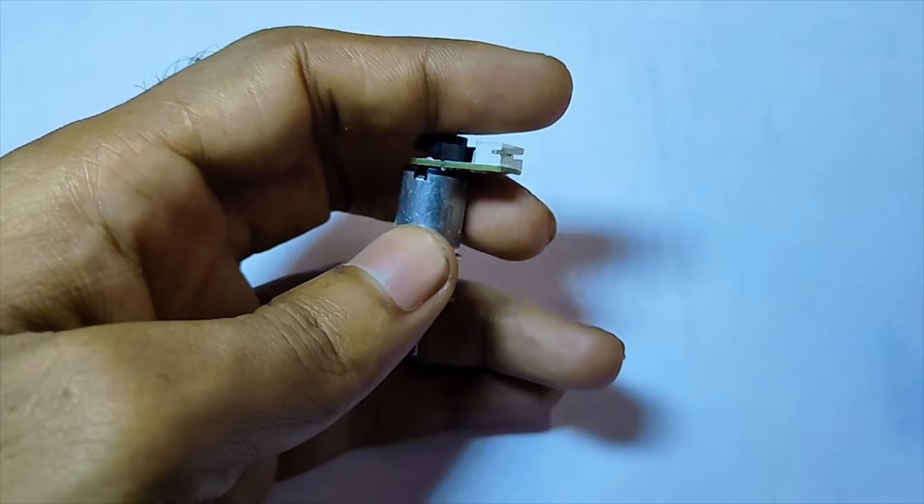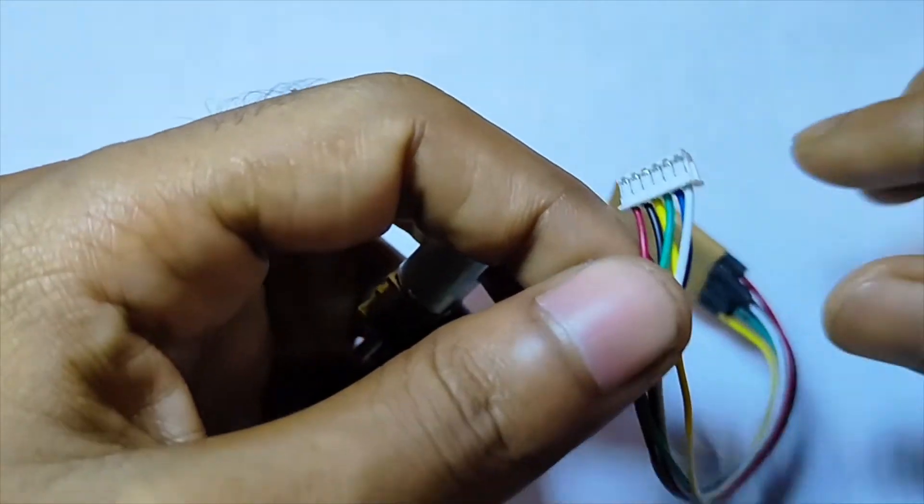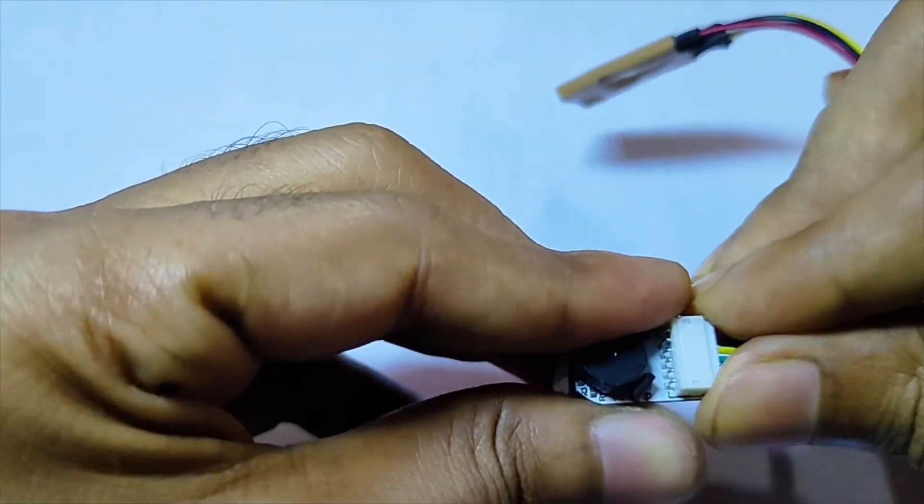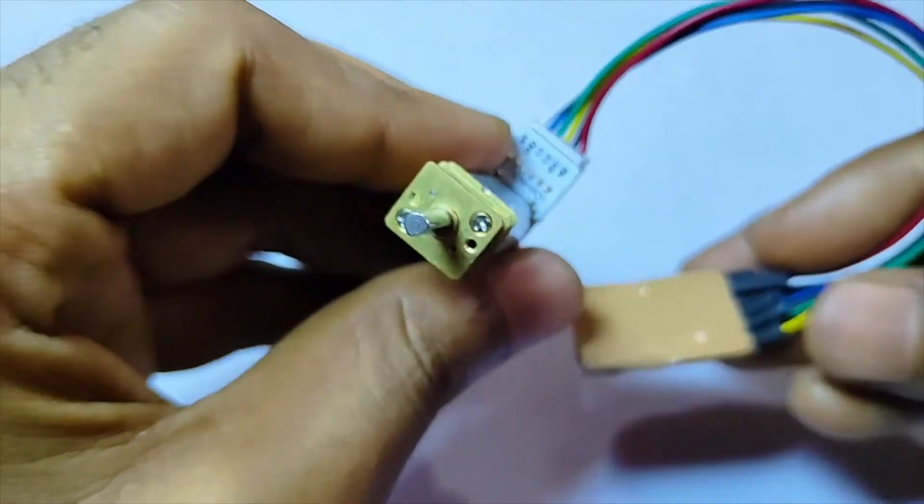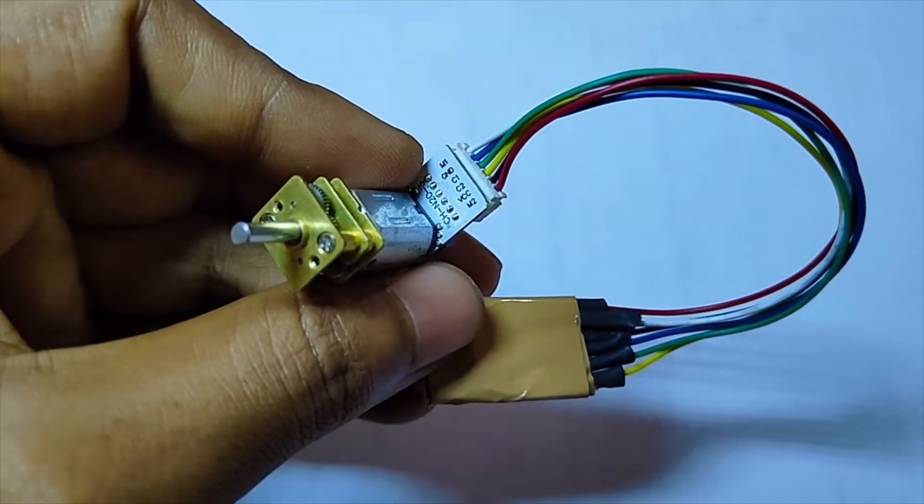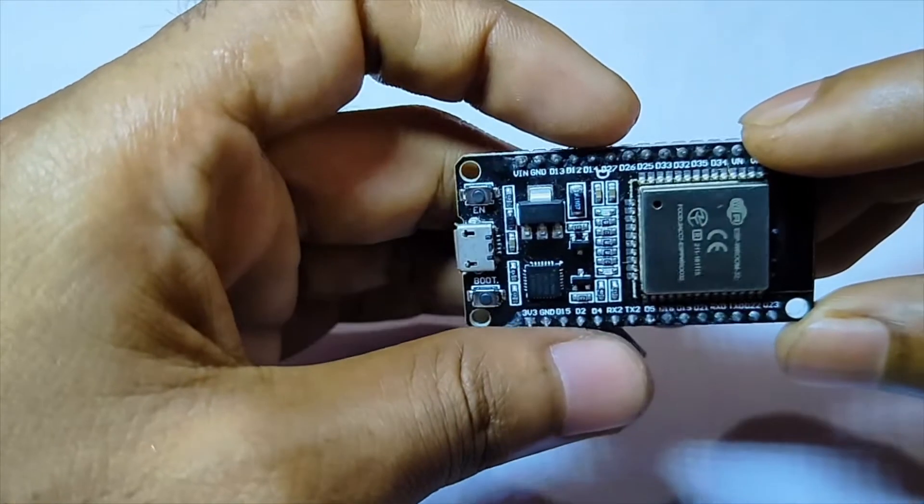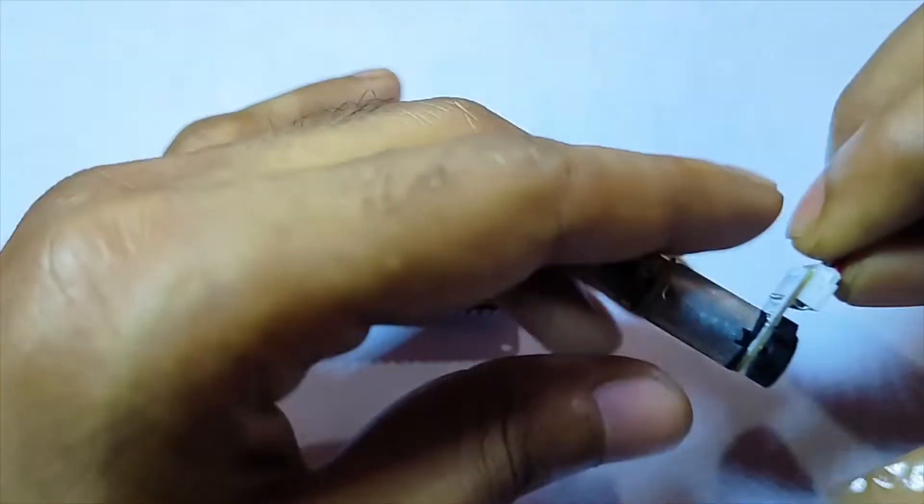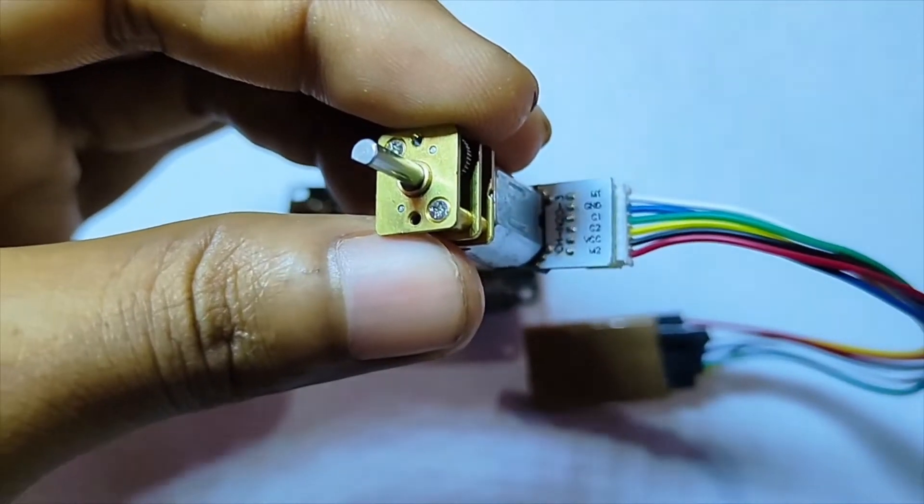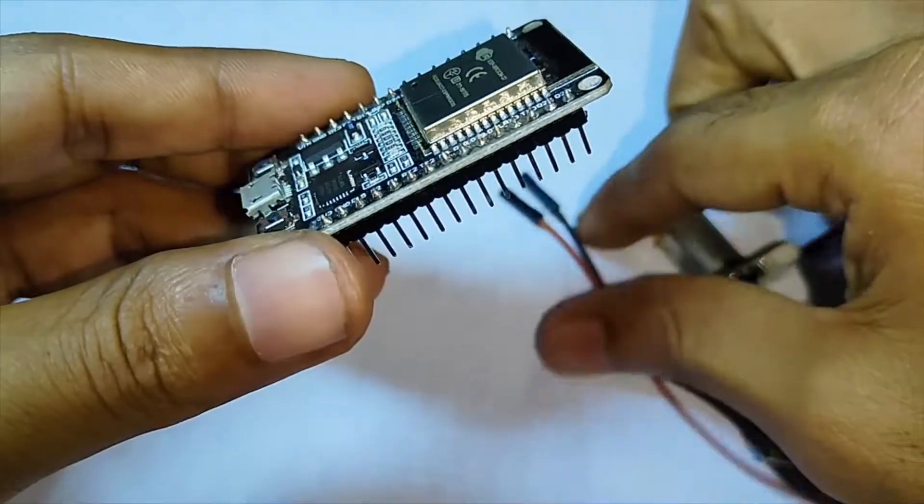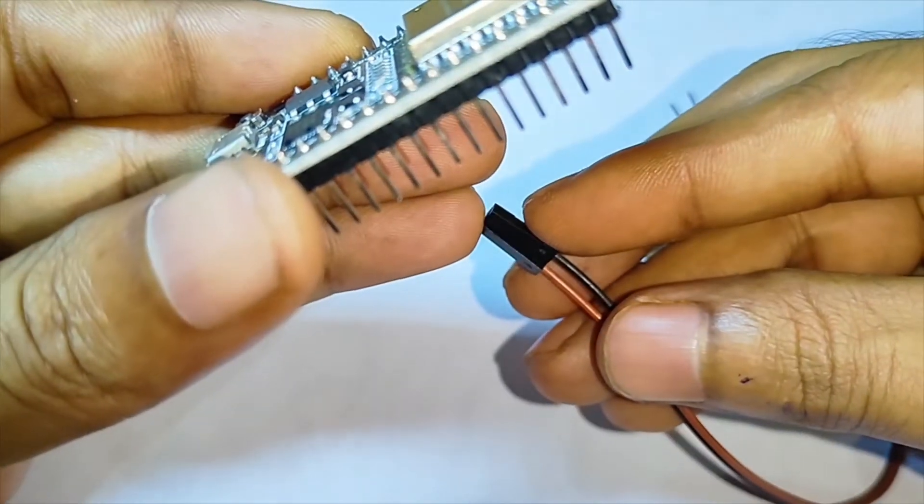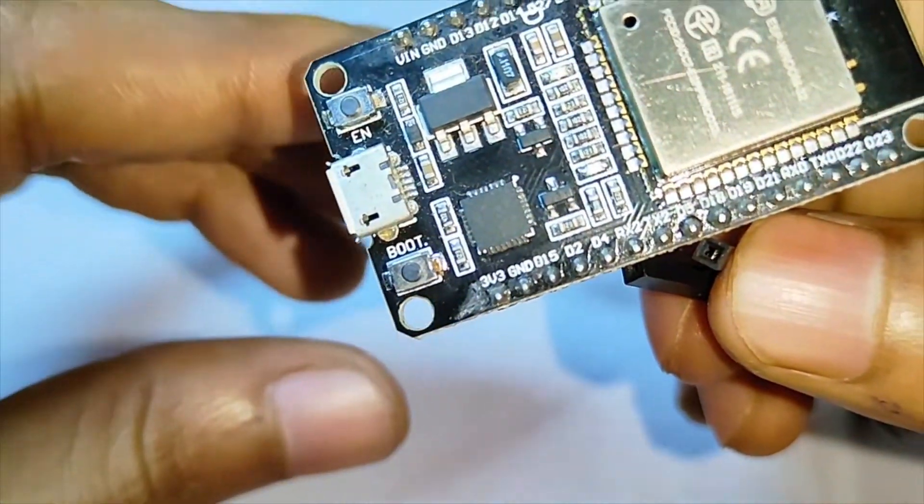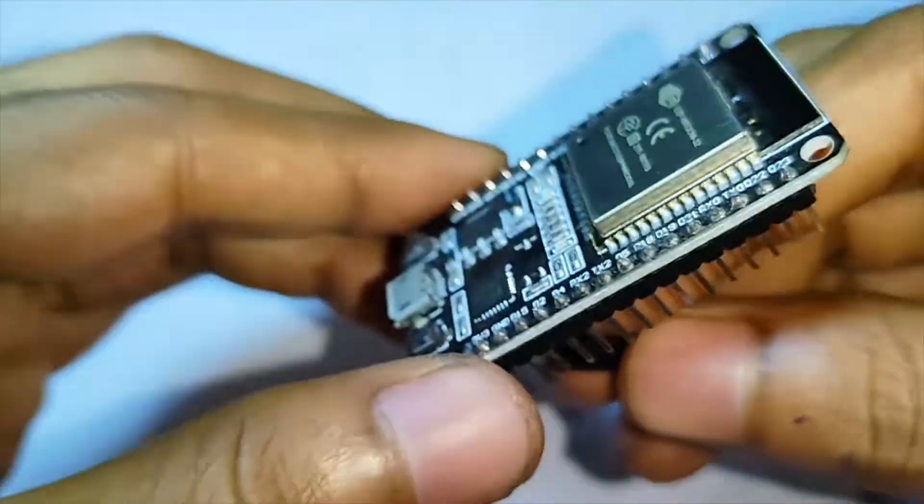Connect the N20 motor to the connector that was provided with it. Connect the 3.3 voltage and ground of the ESP32 with the encoder's GND and VCC pins. I am connecting the brown wire to the 3.3 voltage and black to GND.